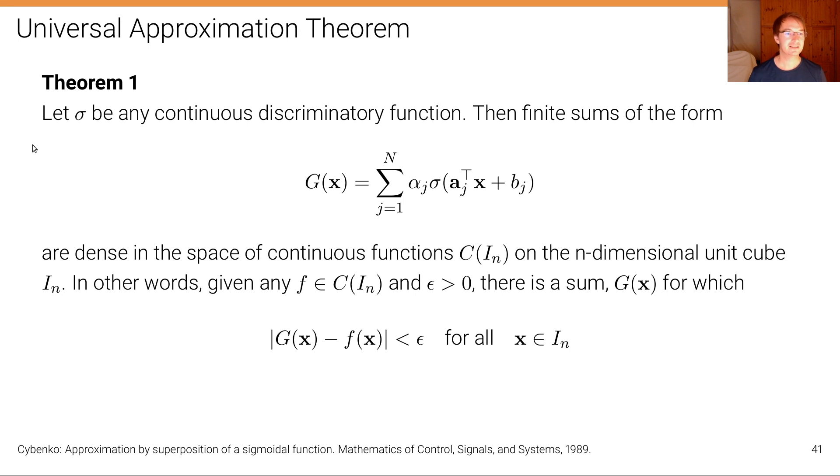Let sigma be any continuous discriminatory function. Then finite sums of the form, you recognize this form as an affine transformation plus a non-linearity followed by another affine transformation, so finite sums of the form G(x) are dense in the space of continuous functions C(I_n) on the n-dimensional unit cube I_n.